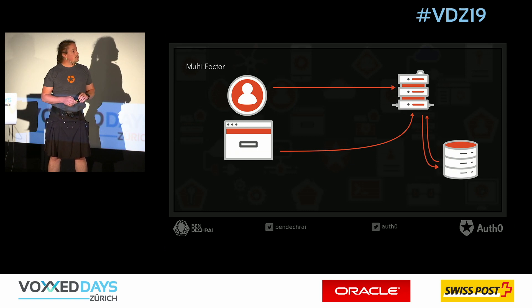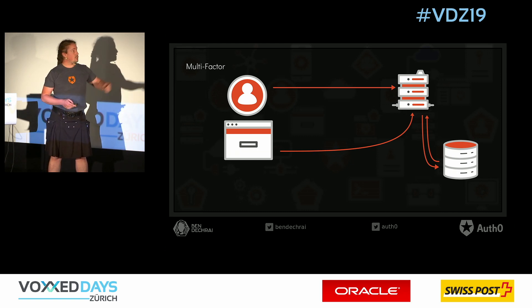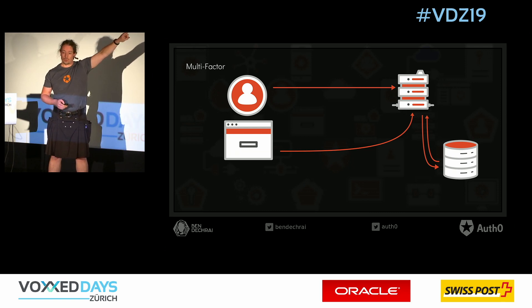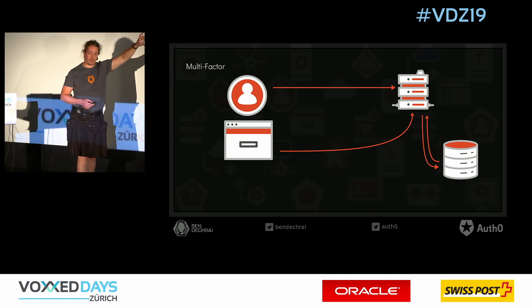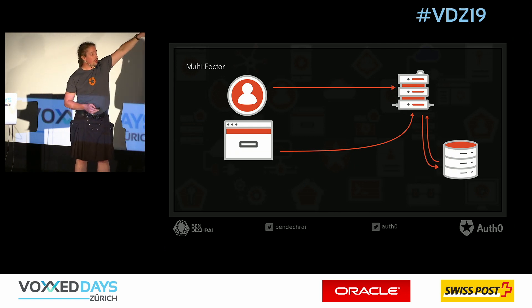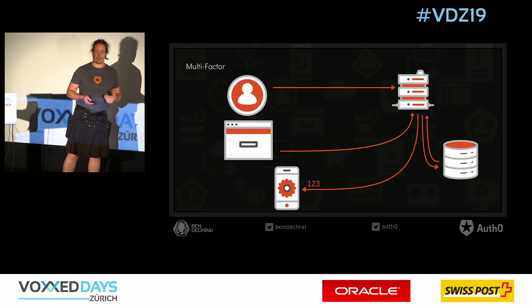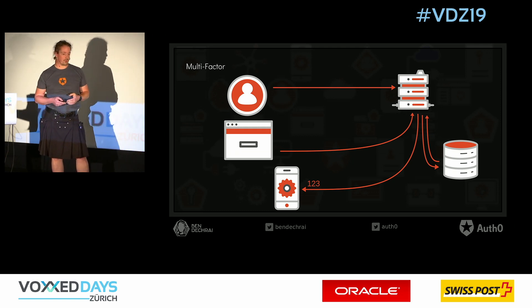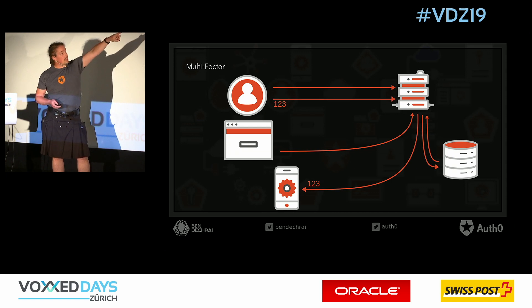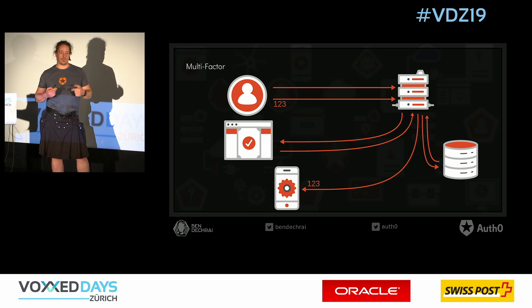Multi-factor — I'm sure you're all aware, but I'll go into this because it then steps into passwordless. With multi-factor, you've got your login form and you've submitted your details to the server, and it pulls your user details out of the database. But then rather than logging you straight in, it'll send you a second code of some sort to another device — it could be an email address or it could be a mobile phone via SMS. The user will submit that back to the server to complete that loop, and then they're logged in. That's how multi-factor, or two-factor authentication, works.